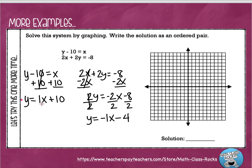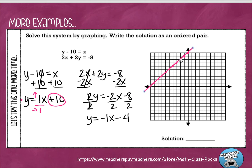Let's graph the first equation in pink again. The y-intercept is at positive 10 — all the way up here. The slope is positive 1, which is 1 over 1 — up 1 and right 1. Since I run out of graph going that direction, I go down and left instead. I fit as many points as I can on the graph to find the exact point of intersection.